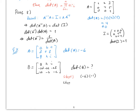Then notice the second row is multiplied by -2, which by property 4 multiplies the determinant by -2. The last row is multiplied by -1, so that contributes another factor of -1. Combining everything: det(P) = -6 times -1 times -2 times -1, which when simplified equals 12.